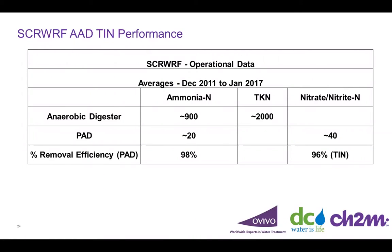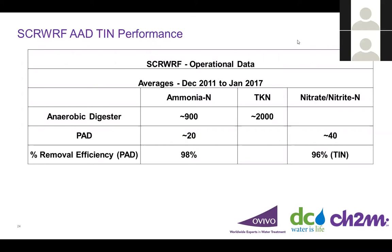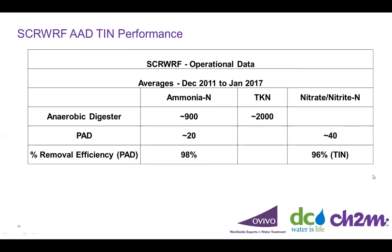The PAD TIN removal — total inorganic nitrogen being a combination of ammonia, nitrate, and nitrite — averaged over about five to six years shows average ammonia going into the PAD process at about 900 mg/L, with 20 mg/L or less coming out on average, which is about 98% ammonia removal efficiency at Spokane. Nitrates are typically 40 mg/L or less, giving an overall TIN removal of 96% in regular operation.